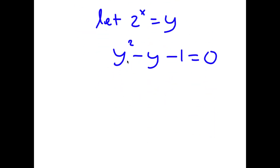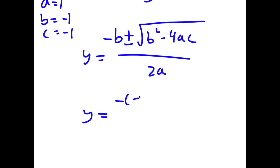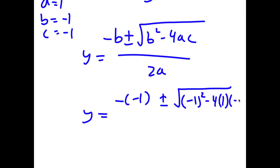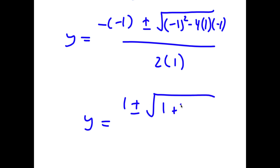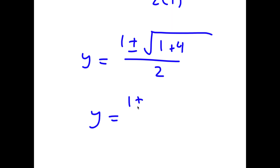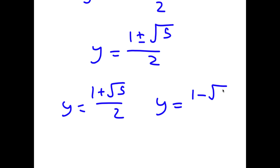To factor this, I'm going to use the quadratic formula: negative b plus or minus the square root of b squared minus 4ac, all over 2a. In this case, a equals 1, b equals negative 1, and c equals negative 1. So y equals negative of negative 1 plus or minus the square root of negative 1 squared minus 4 times 1 times negative 1, all over 2 times 1. This equals 1 plus or minus the square root of 1 plus 4 over 2, which is 1 plus or minus the square root of 5 over 2. So y equals 1 plus the square root of 5 over 2, or y equals 1 minus the square root of 5 over 2.